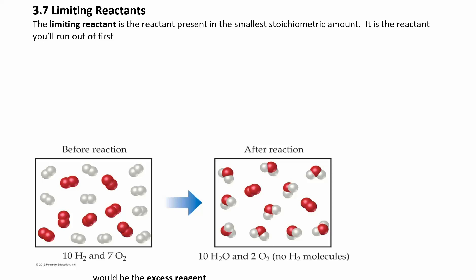Now we can look at some limiting reactant problems, applying the principles of stoichiometry to a real-life situation. Suppose you were making sandwiches — one sandwich is made of two pieces of bread plus one piece of cheese, and that gives you one sandwich.